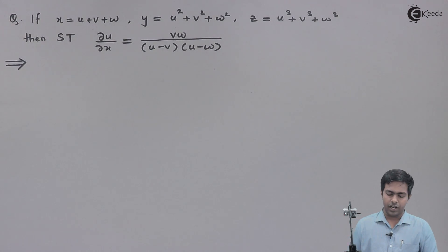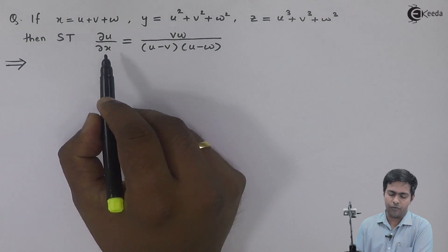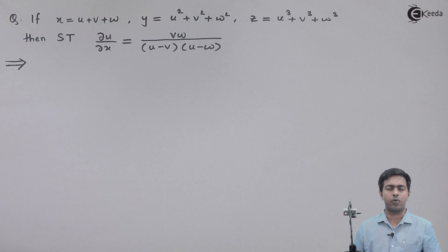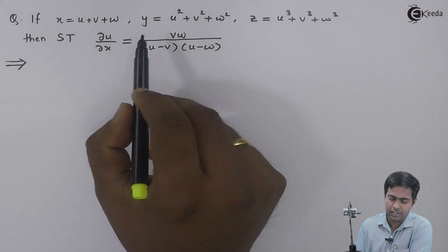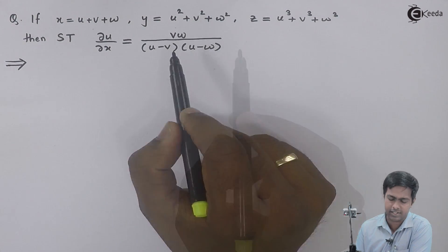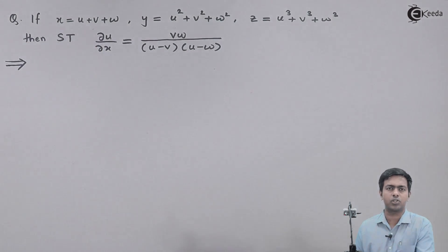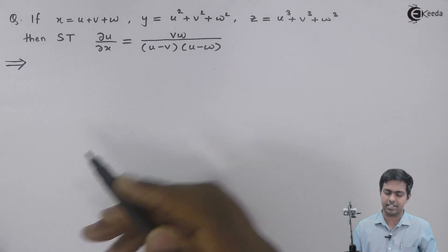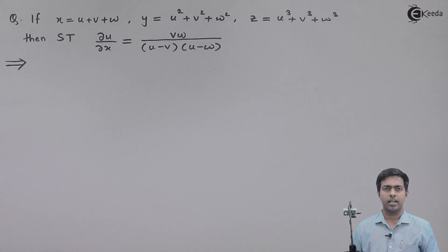Now, if we try to use the definition of partial differentiation to find dou u by dou x, we would require u in terms of x. But if you observe here, u is not given in terms of x — rather x, y and z are given in terms of u, v and w. So to find dou u by dou x is quite difficult since we don't have the value of u.